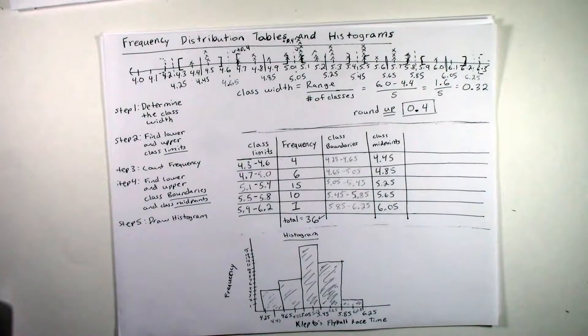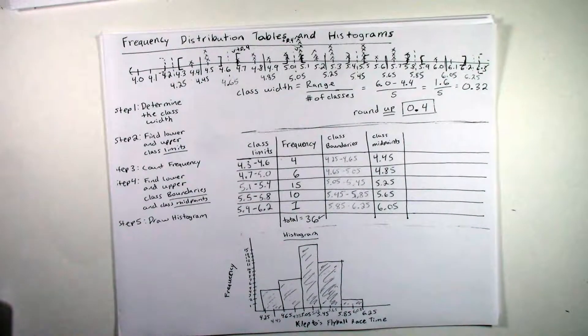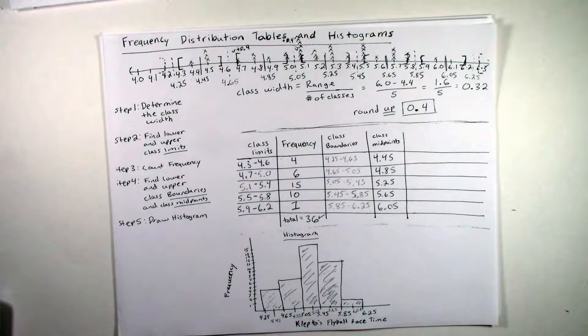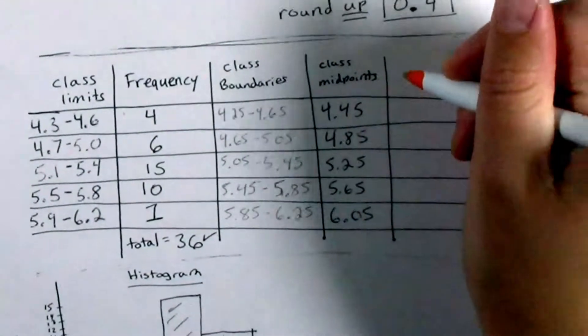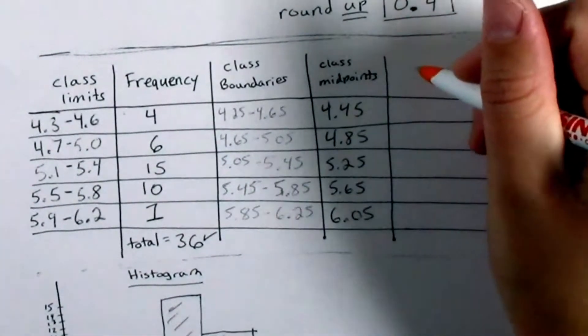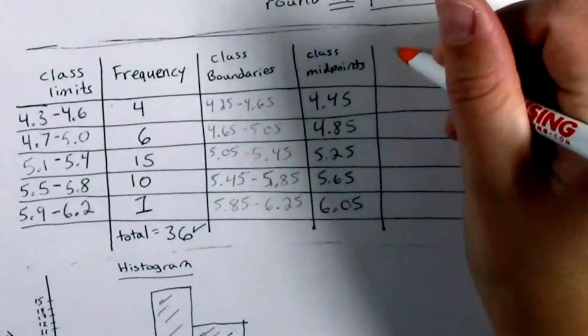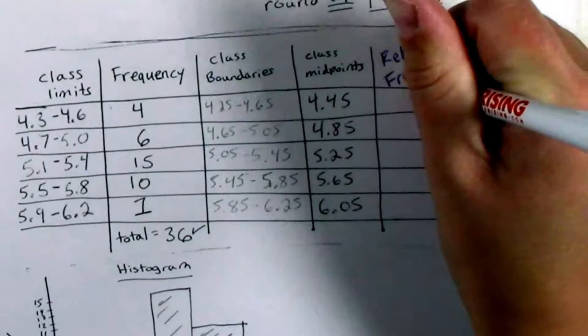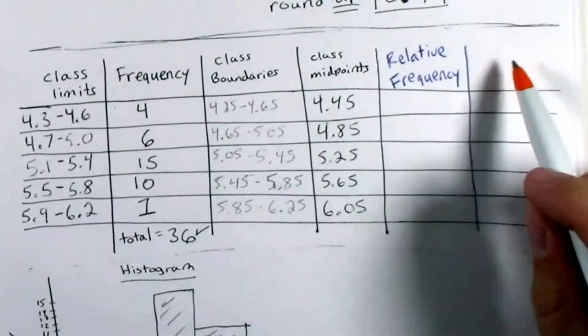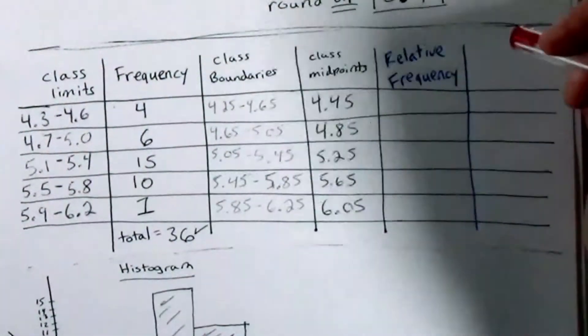Okay, so what we want to do in this video is add to this frequency distribution table two more columns, one column for the relative frequency, and another column for the cumulative frequency.